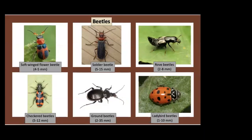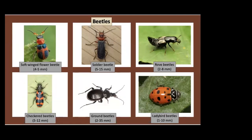Moving on to beneficial beetles. There are common names for the different families of beetles, and each family consists of hundreds or sometimes thousands of species, so a wide variation in size and coloration exists. For instance, ground beetles have more than 40,000 species worldwide; ladybird beetles have about 500 species in the US and Canada; and rove beetles have about 3,100 species in North America. You can purchase ladybird beetles and rove beetles for biocontrol releases.